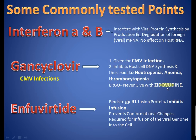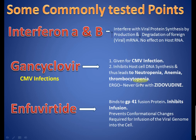Never give gancyclovir with zidovudine due to synergistic bone marrow suppression. Gancyclovir is used for CMV infections — so if a vignette involves CMV, think gancyclovir. Foscarnet is another option for CMV infections; it inhibits DNA polymerase and is a pyrophosphate analog. But gancyclovir remains the primary drug for CMV.